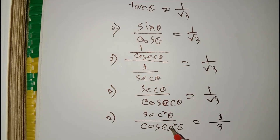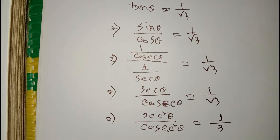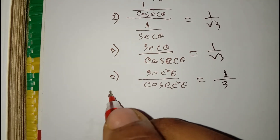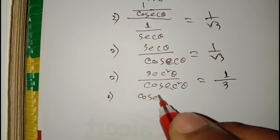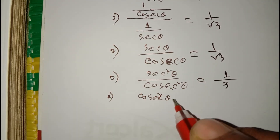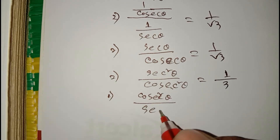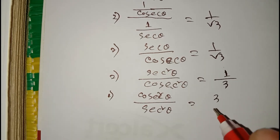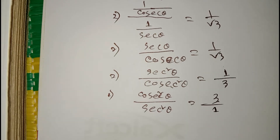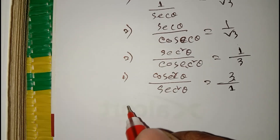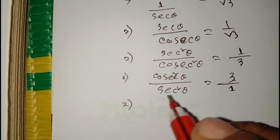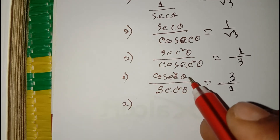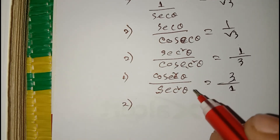Rearranging, cosec square theta divided by sec square theta equals 3 over 1. So cosec square theta is 3 and sec square theta is 1 in ratio form.